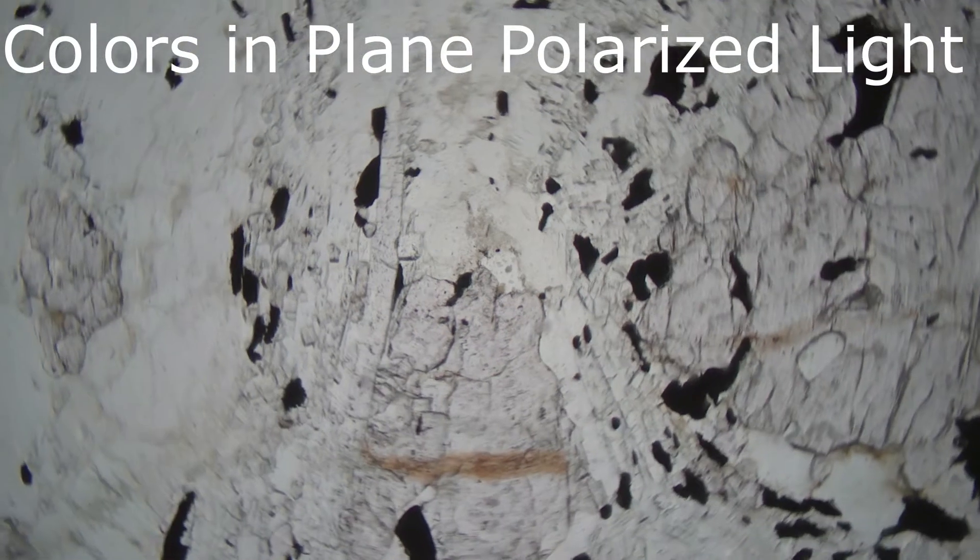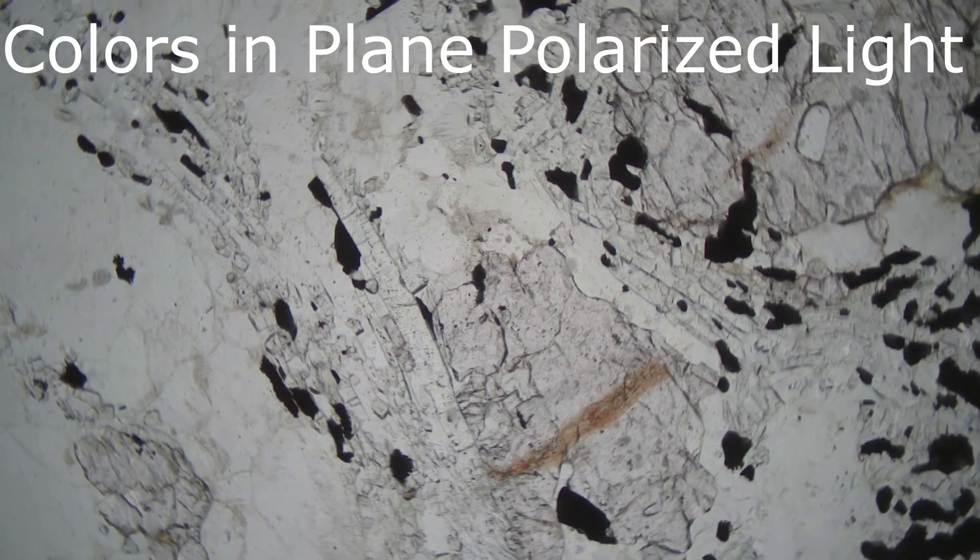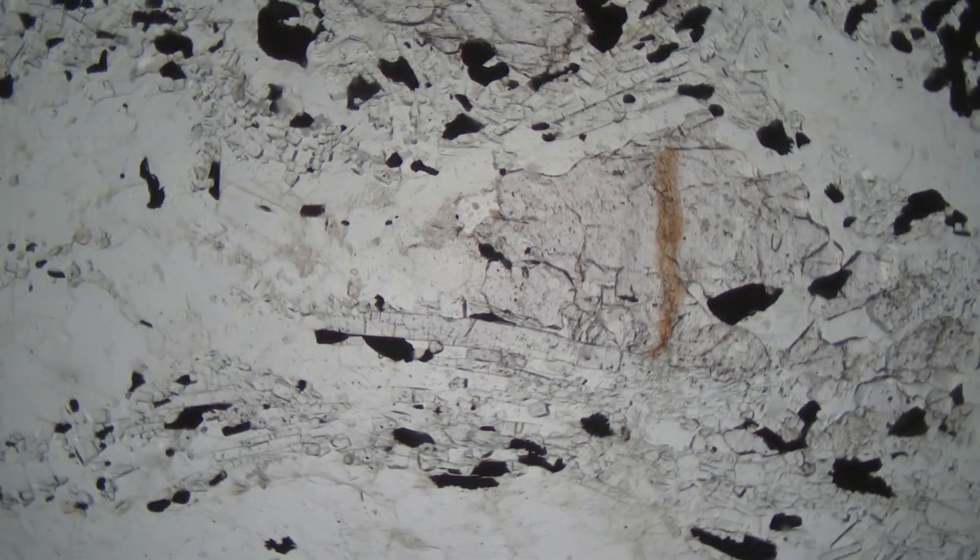Here we see a thin section of a metamorphic rock in plain polarized light. The black grains are ilmenite. Ilmenite is an opaque mineral, which means it will not transmit light even if we rotate the stage.